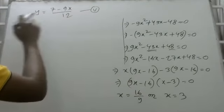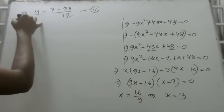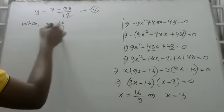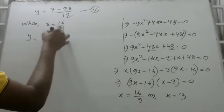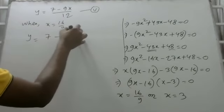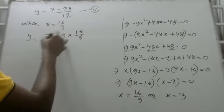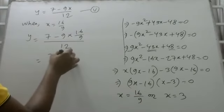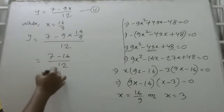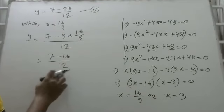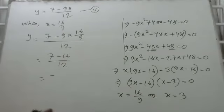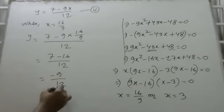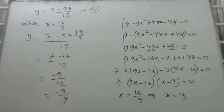When x equal to 16 by 9, y equal to 7 minus 9 into 16 by 9, divided by 12. So calculate: 7 minus 16 by 12, which gives minus 9 by 12, so it is minus 3 by 4.